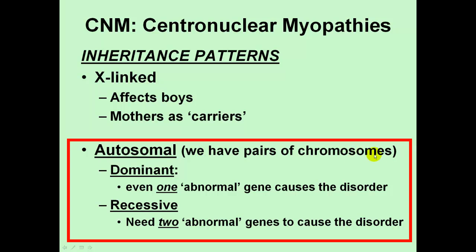For autosomal chromosomes, we have pairs of all of these — one that comes from mom and one that comes from dad. An autosomal genetic condition is one on one of these non-sex chromosomes, and within that, it's broken down into whether the condition is considered dominant or recessive, depending upon how many copies of the abnormal gene you need to cause the disorder. With a dominant pattern, even one abnormal copy is enough. With a recessive condition, you need both copies — one from mom and one from dad — to be abnormal in order to have the condition.